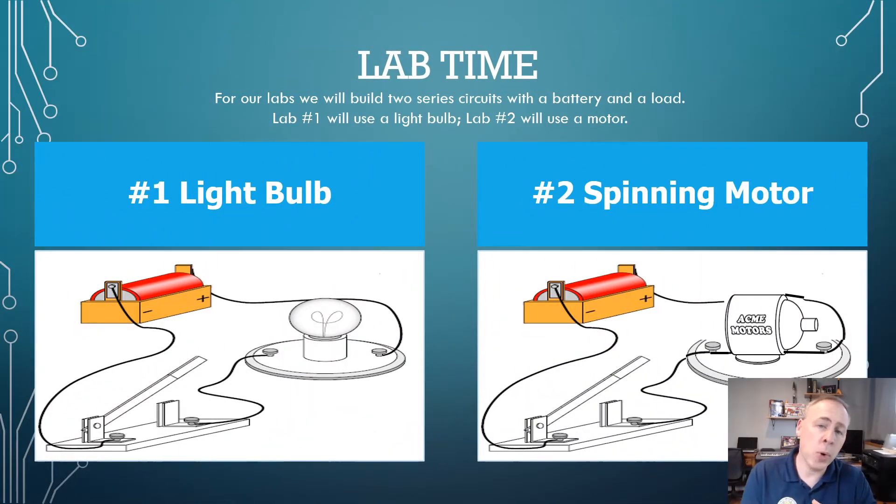All right guys, so for our lab time, we're going to build two series circuits, both using different components. For our first lab, we're going to be using a light bulb. We know what a light bulb does. We are transferring electrons into heat energy, which appears in the form of light. For our second lab, we're going to be using a motor. Again, this motor is going to be using electrons to create motion. So I want you, as we go through this, to observe the different functions and how things are operating in both these different labs.